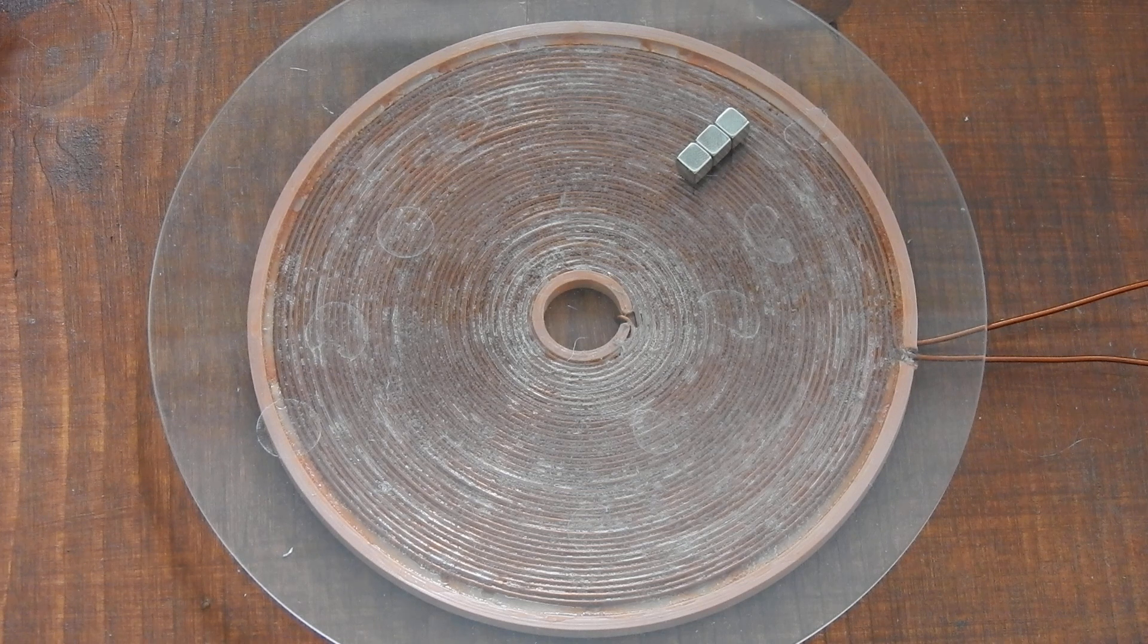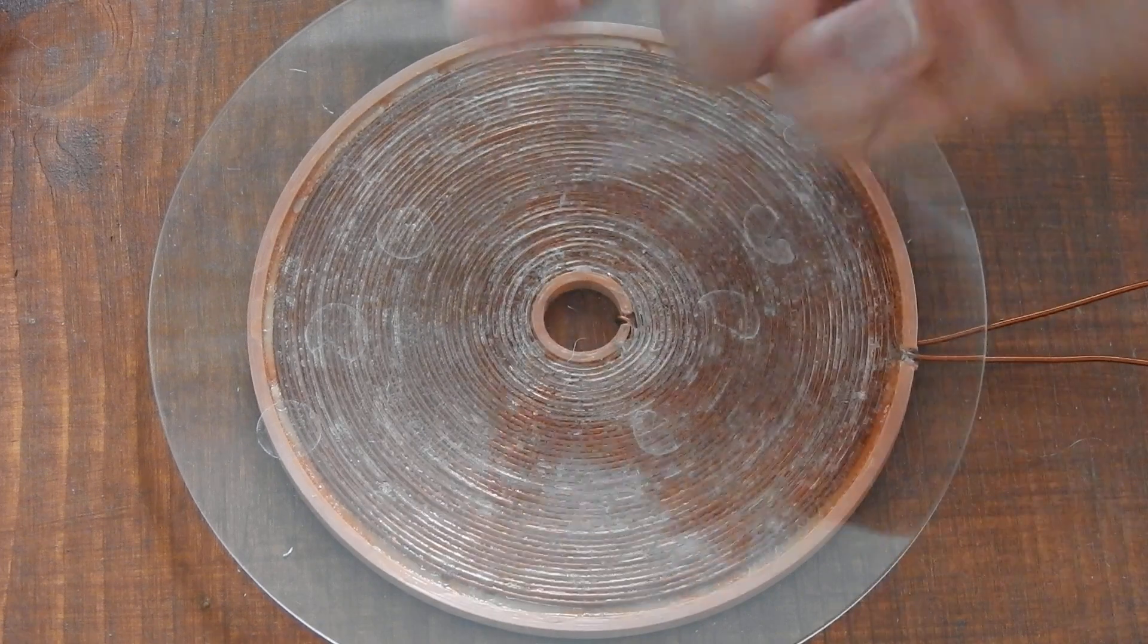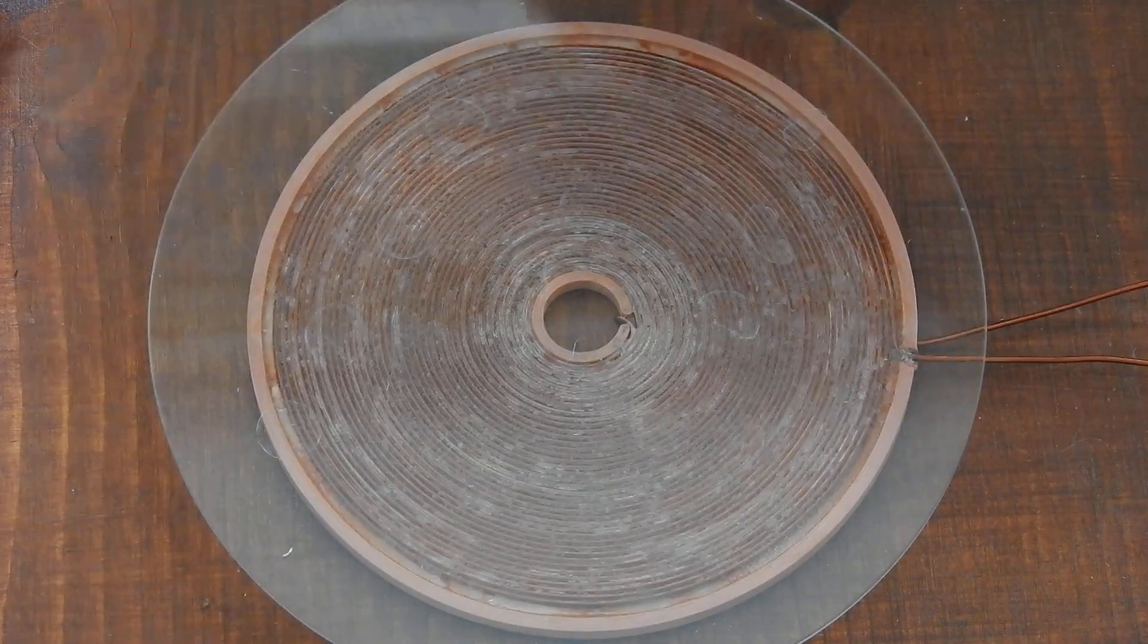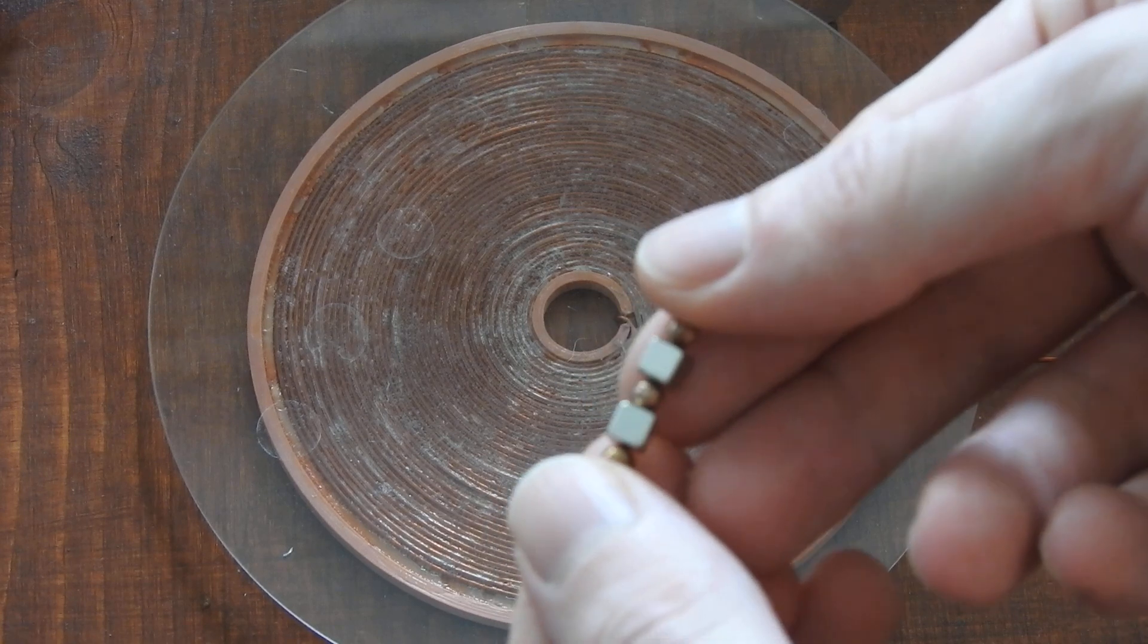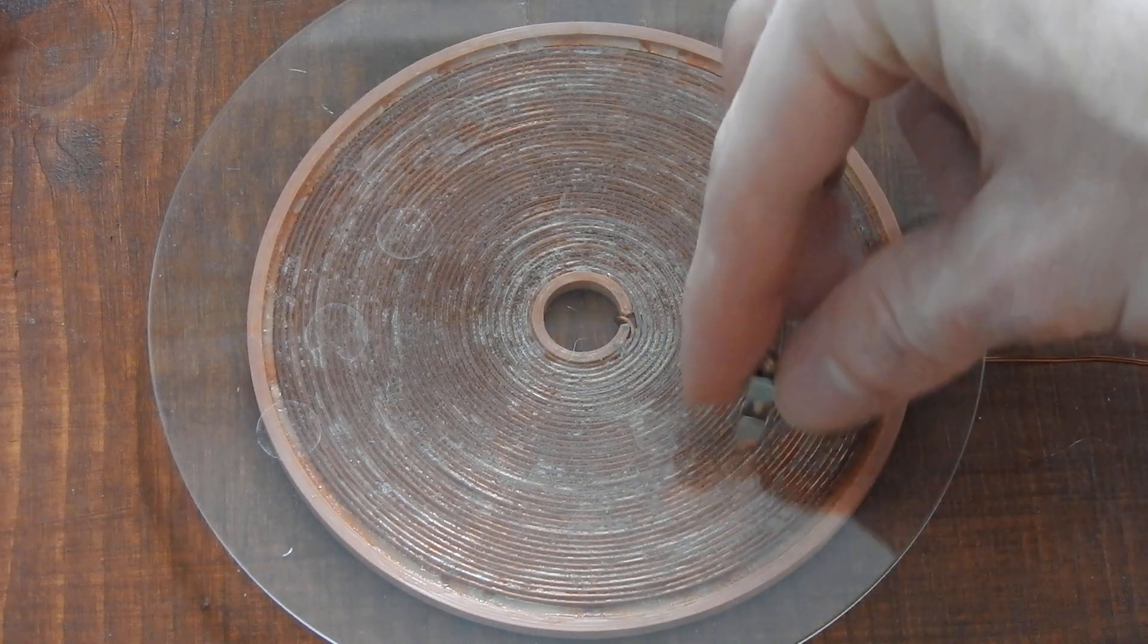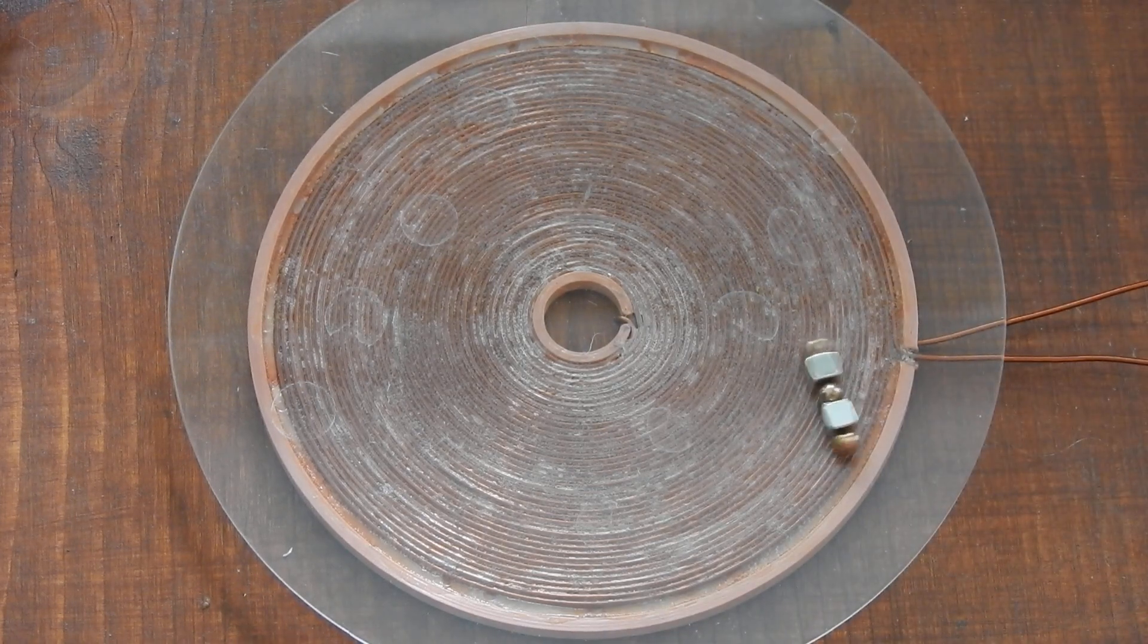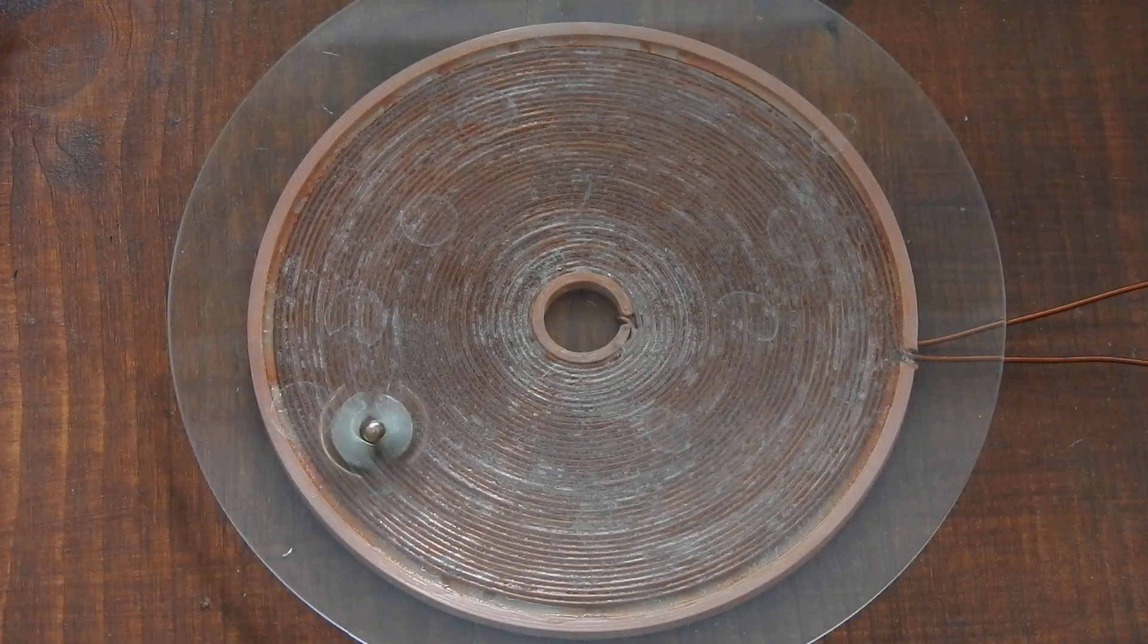And now I will also show you something interesting. You don't even need just magnets like this. What you can also do is take some steel spheres. These are just copper coated steel spheres and put them between the magnets. And this will of course also work. And they will start to rotate and process just like the magnets.